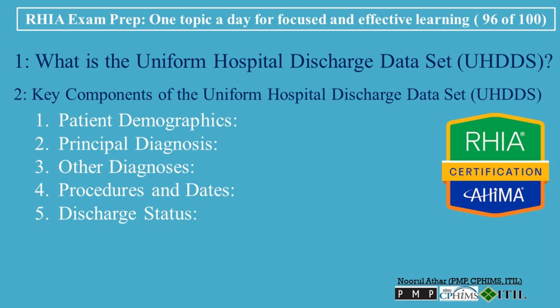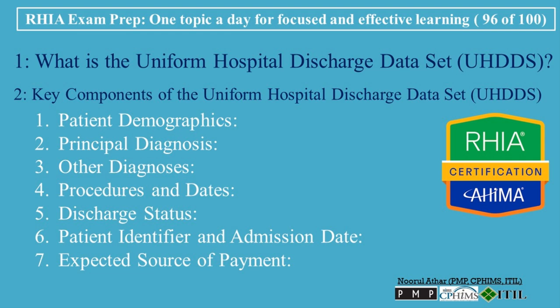Discharge status is crucial for understanding patient outcomes and coordinating post-hospital care. The UHDDS also includes a unique patient identifier and the date of admission, which are essential for tracking individual patient records and calculating length of stay, influencing reimbursement. Finally, the expected source of payment provides information on the payer, such as Medicare, Medicaid, private insurance, or self-pay, helping analyze healthcare funding sources.